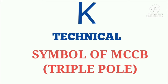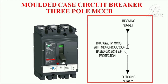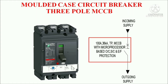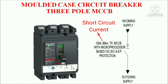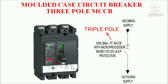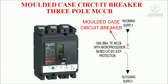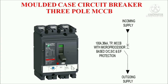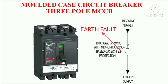Now let's talk about MCCB — moulded case circuit breaker. The symbol of 3 pole MCCB is shown here. You have to write the rating like this: 100 Ampere current rating, 36 is short circuit rating, TPS means 3 pole. MCCB with microprocessor has two types of protections: one with microprocessor and another with thermal magnetic — covering over current, short circuit, and earth fault protection.